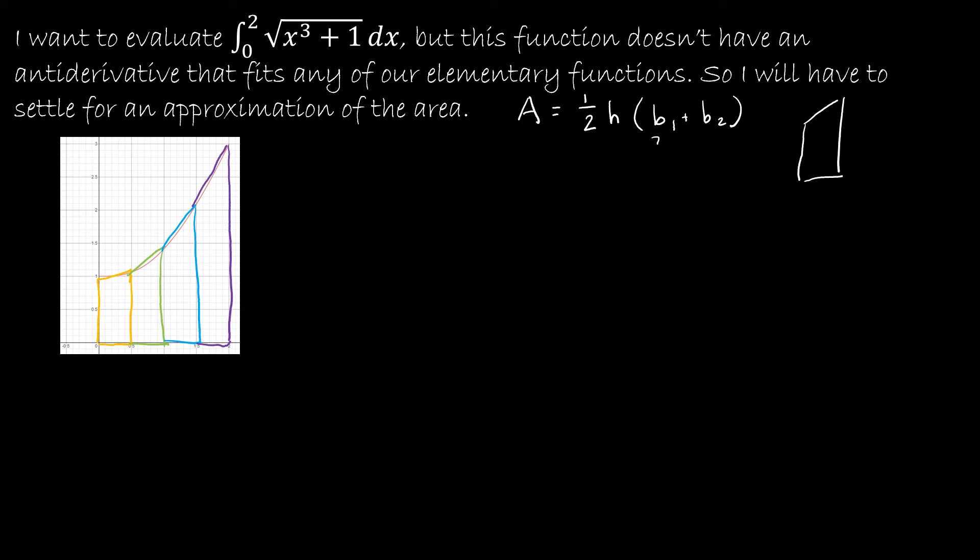But remember a trapezoid is a four-sided figure where we have opposite sides are parallel and those are the bases. So in the example that we're using the guy on the left is going to be base one and the guy on the right is going to be base two and this distance which is obviously perpendicular to those bases is going to be the height. So that's the values that we're going to use for each of these trapezoids. So if I were going to find the area of the yellow trapezoid I would take one half from the formula and then I would take the height. Now the height in this case is again this distance and I can see that goes from 0 to 0.5 which is 0.5 or one half.